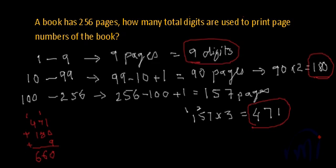We will need 660 digits to print page numbers on a book which is 256 pages thick. So how have we done it?